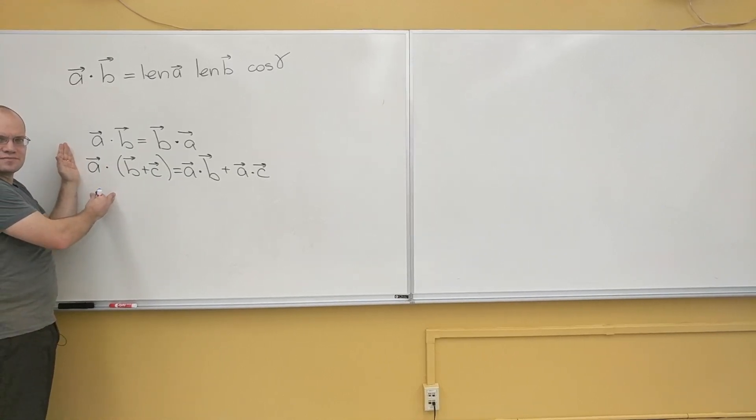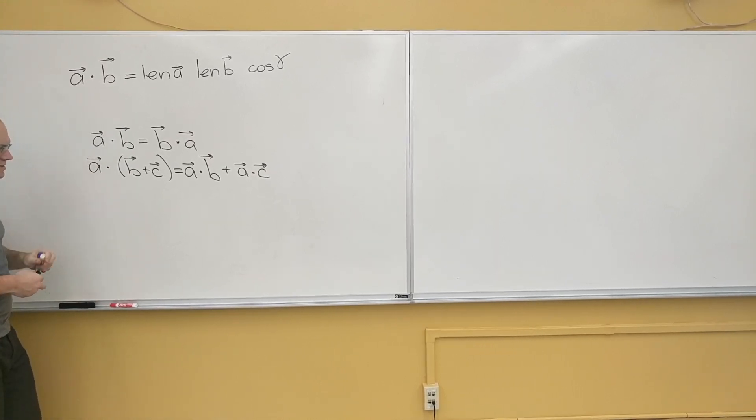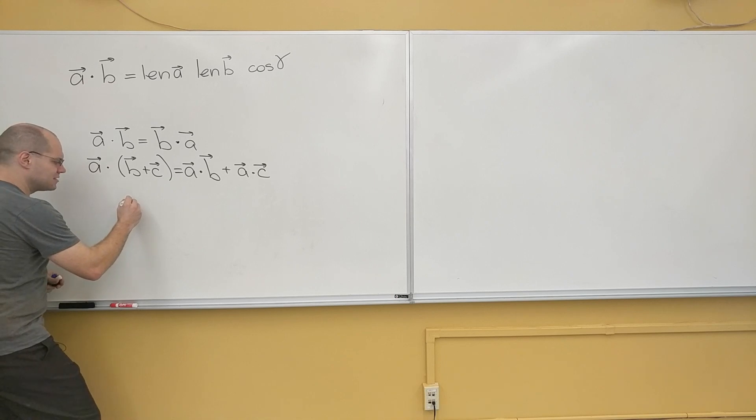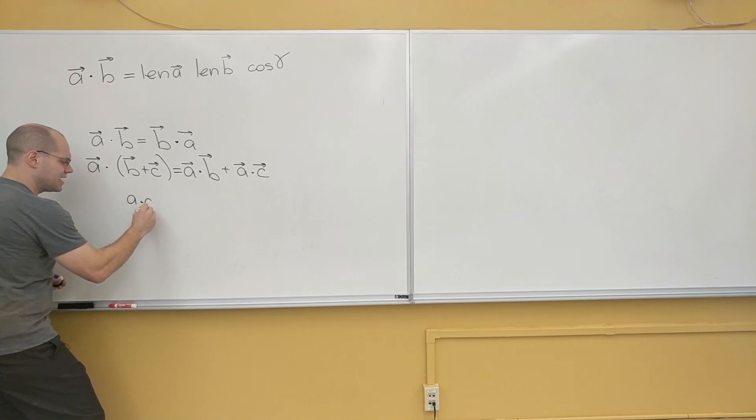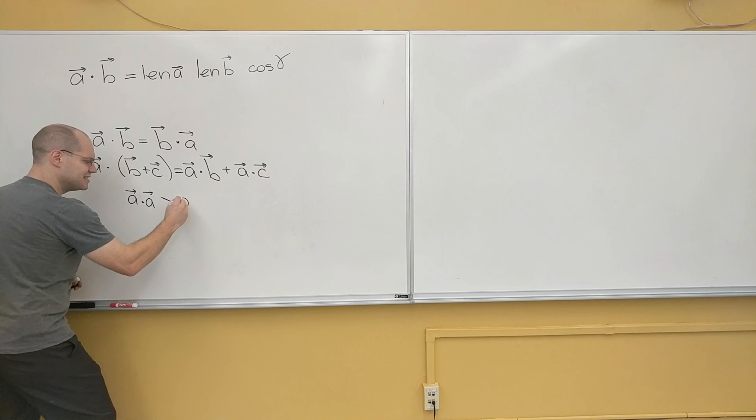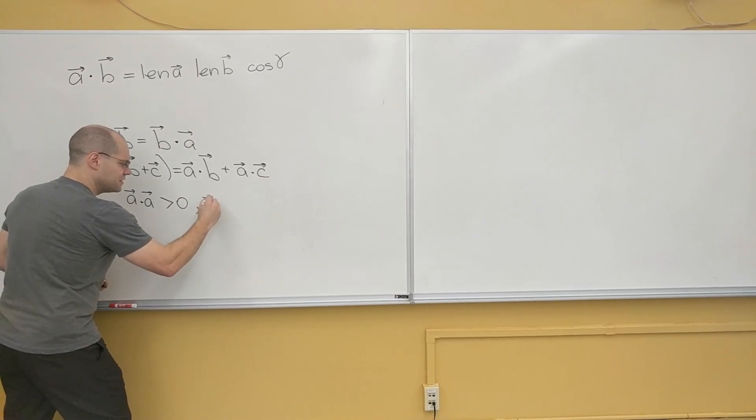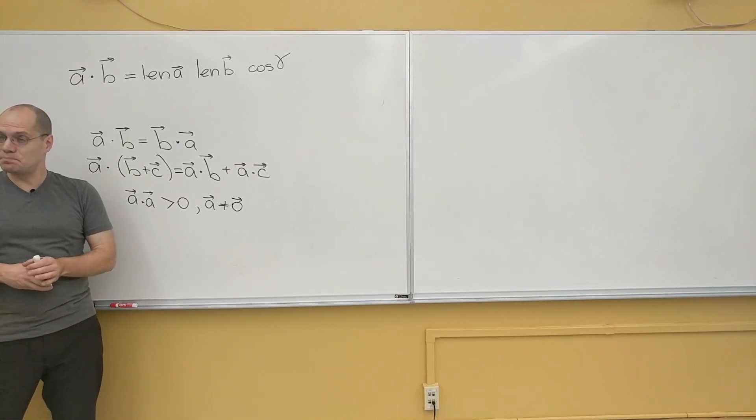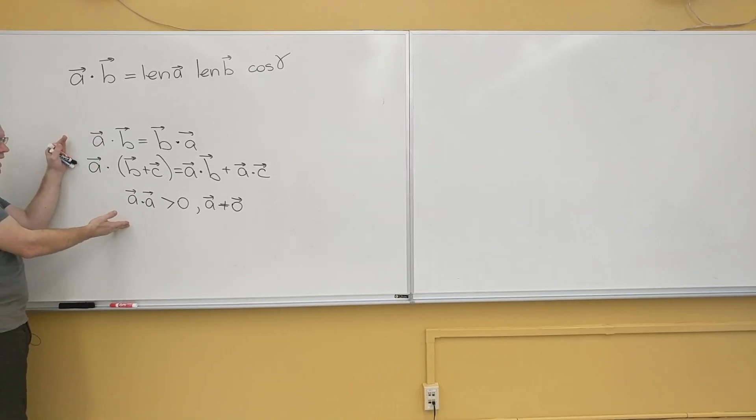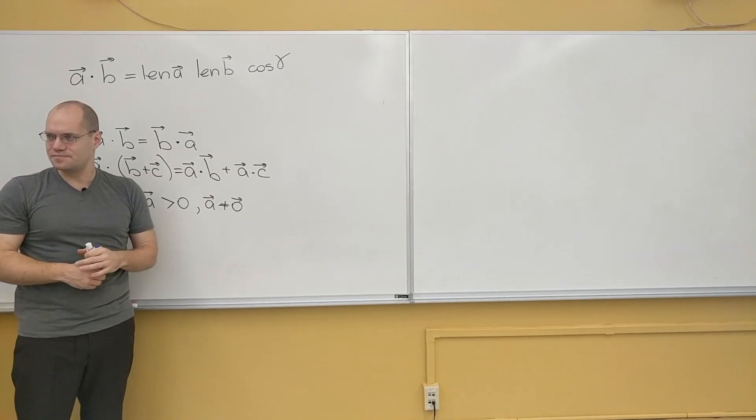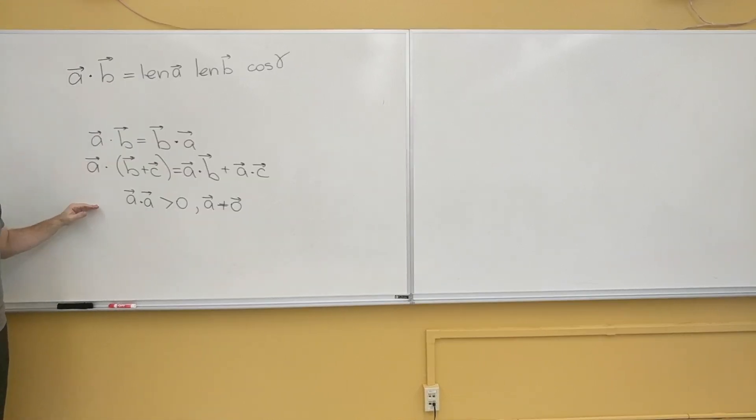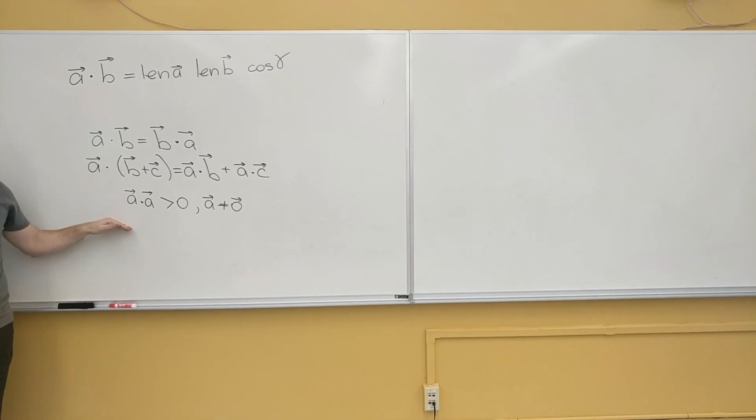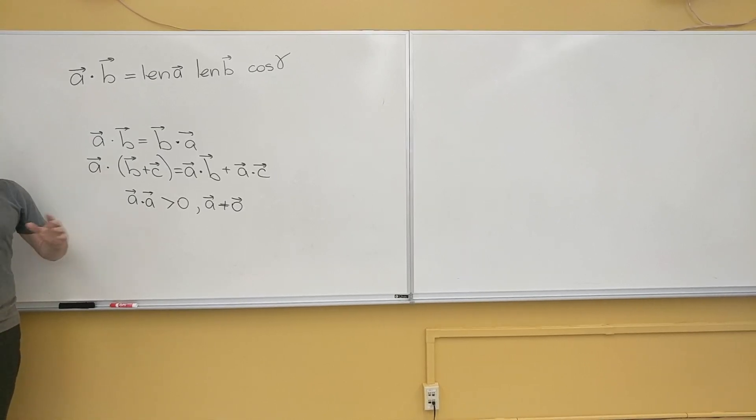So what linear algebra says is, whatever operation with respect to whatever types of vectors, if it satisfies these three properties, the third one being positive definiteness, that something dotted with itself is greater than zero if the vector itself is not zero. So in linear algebra, the position is that if you have an operation that takes two vectors and returns a scalar, and it satisfies these three properties, commutativity, distributivity, positive definiteness, then it's a dot product.